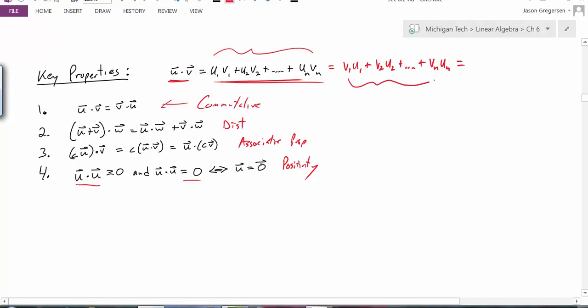But this is just by definition of dot product, the dot product of v dot u. So I've shown that u dot v is equal to v dot u. So these properties are really proven just that easily. We write out the definition of the dot product, and then we use the property of real numbers to show these properties hold.